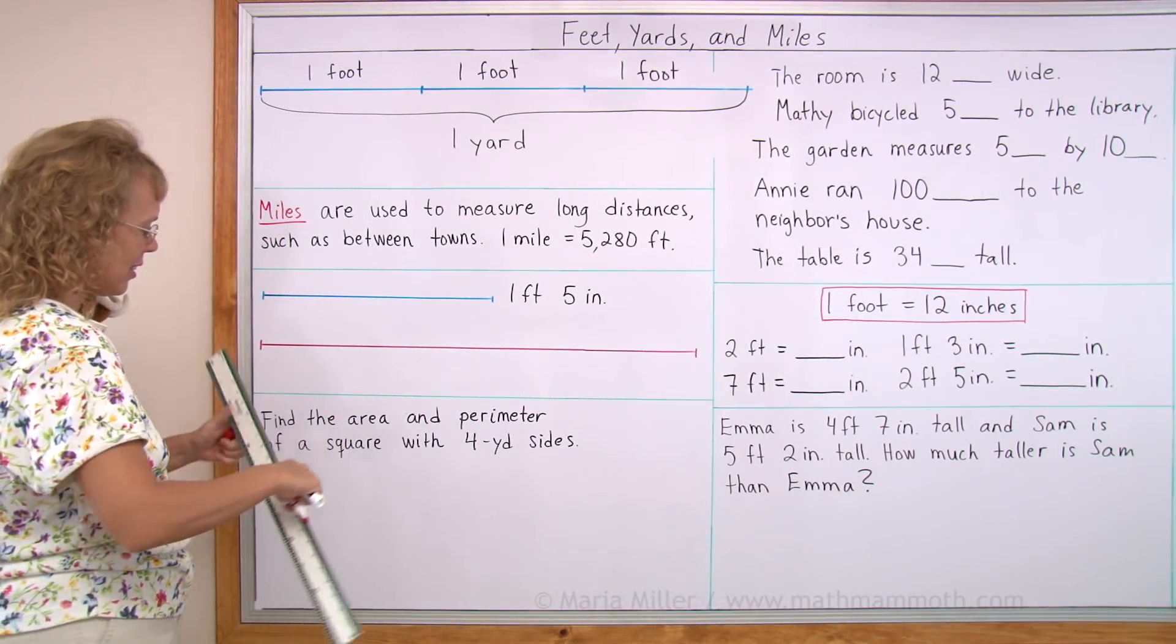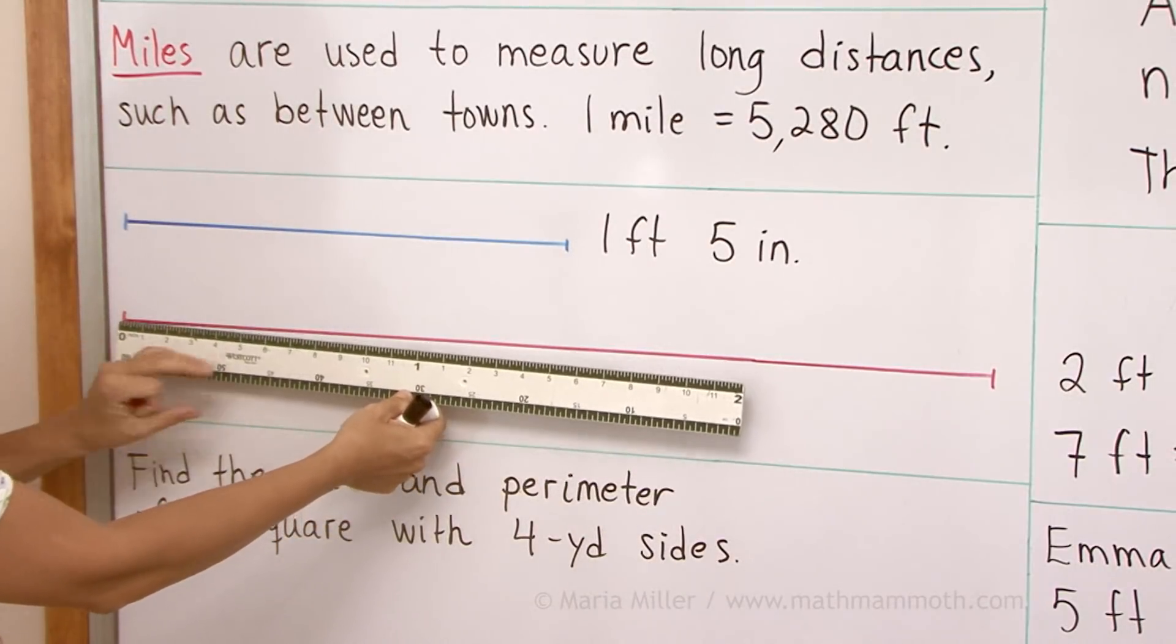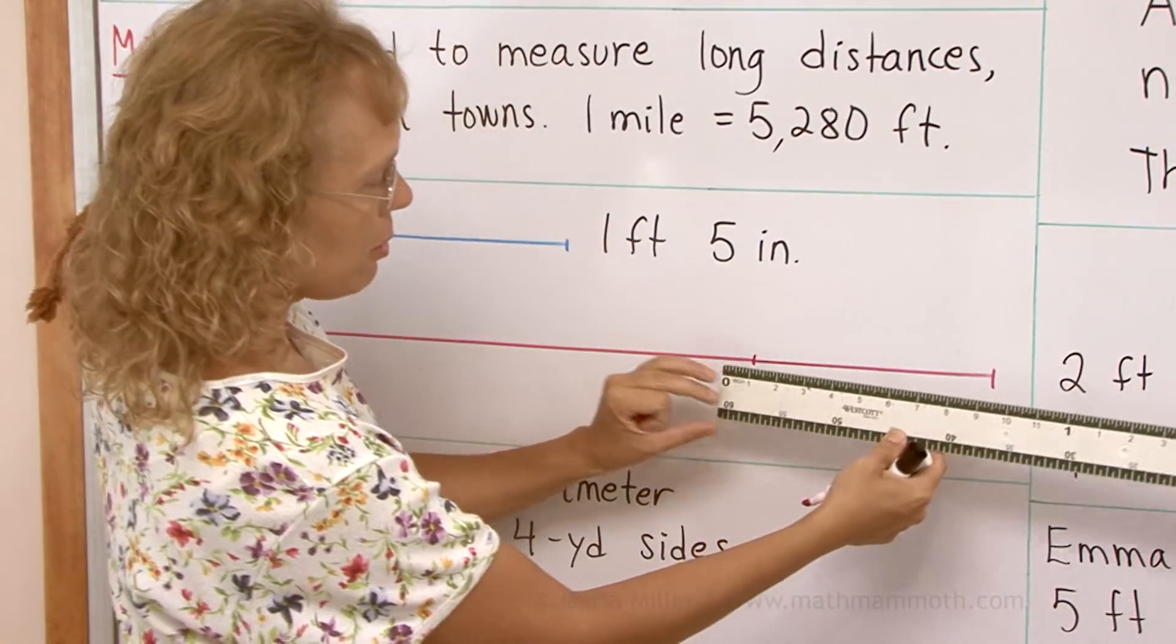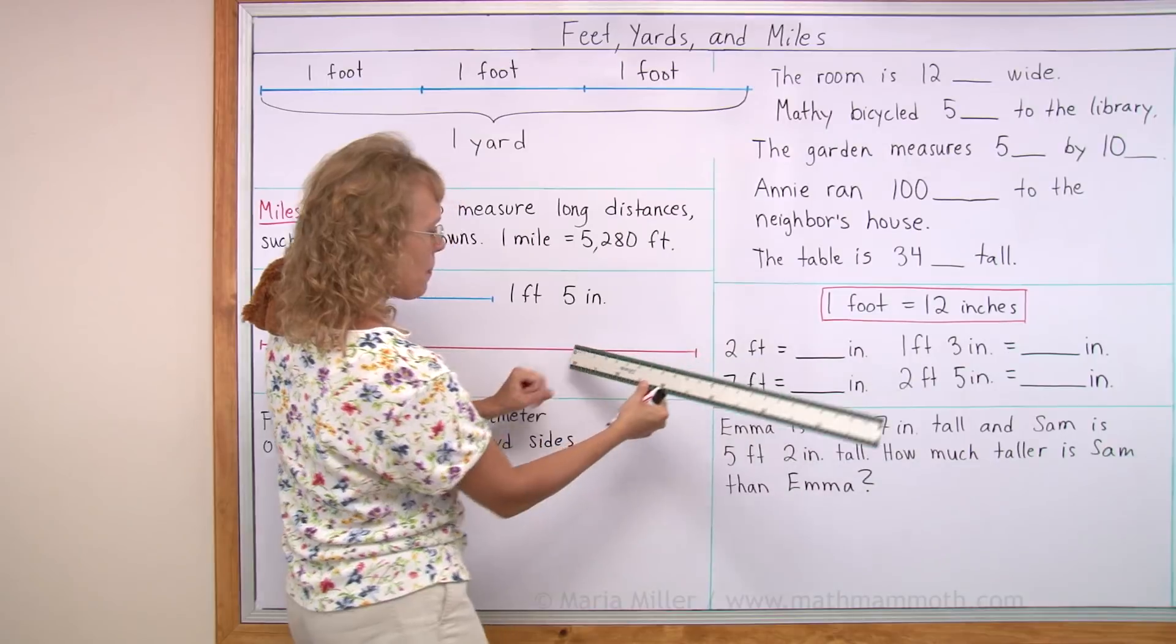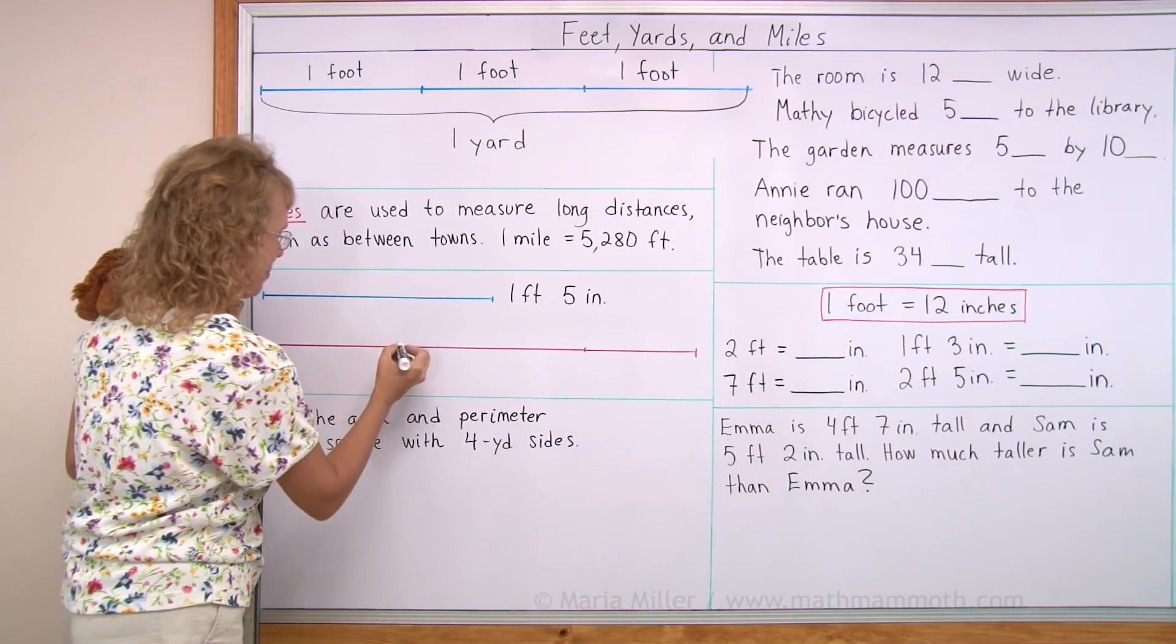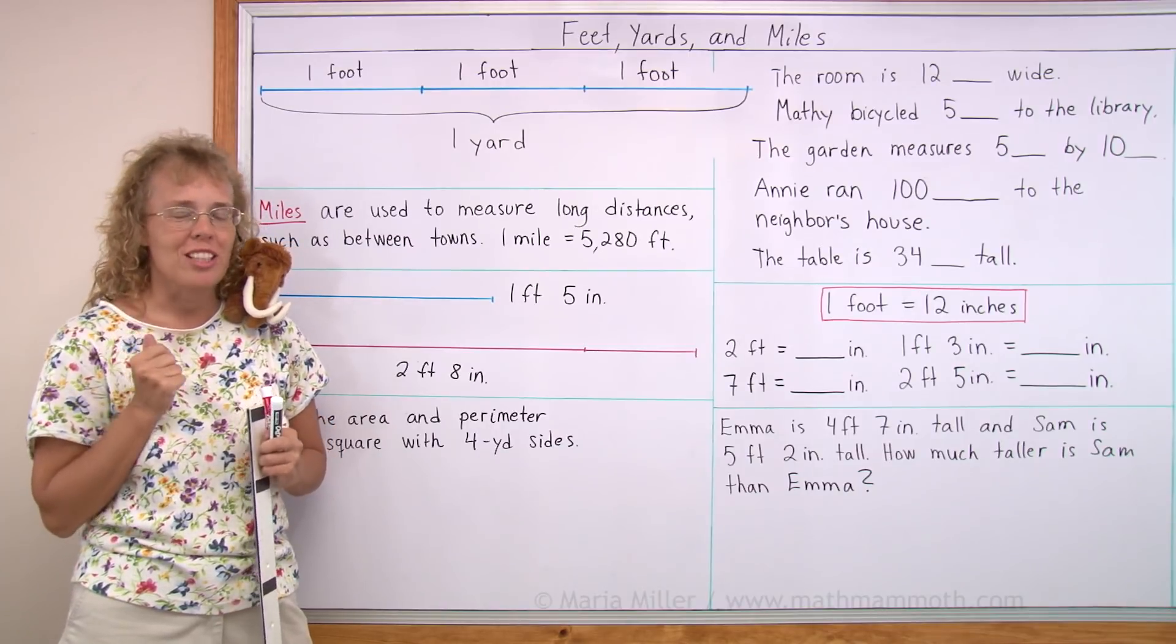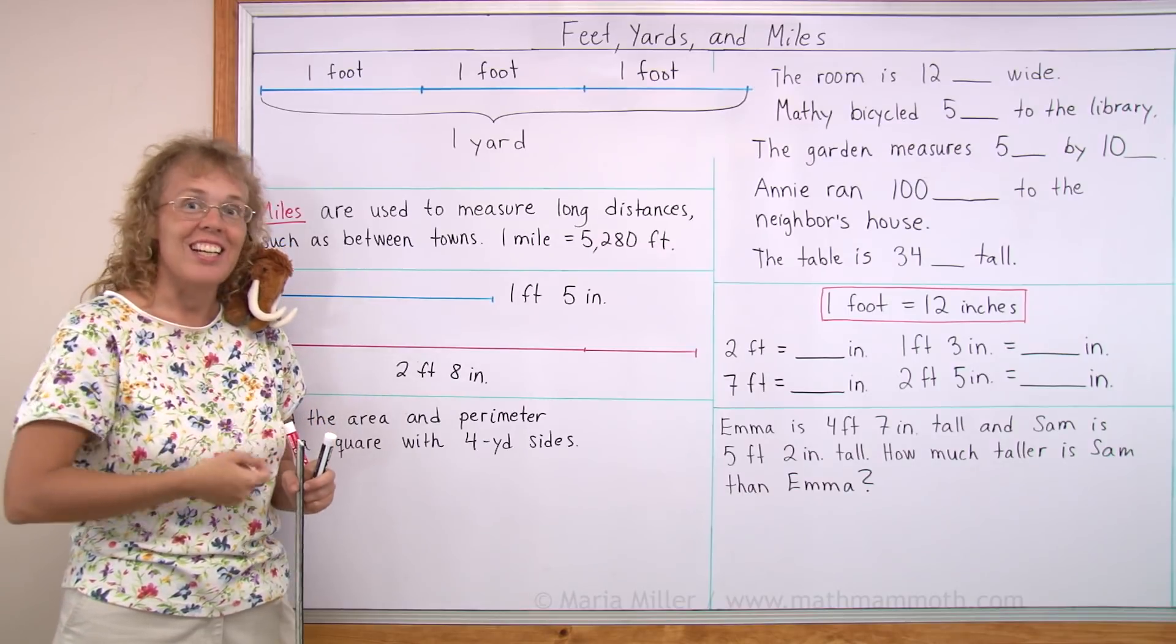This second line is longer than my ruler. So what I will do is I will mark here at two feet, then take my ruler and it is eight inches. Or in other words, two feet, eight inches. And I want you to measure, practice measuring things, how high they are or how tall or how wide or how long different things are in feet and inches.